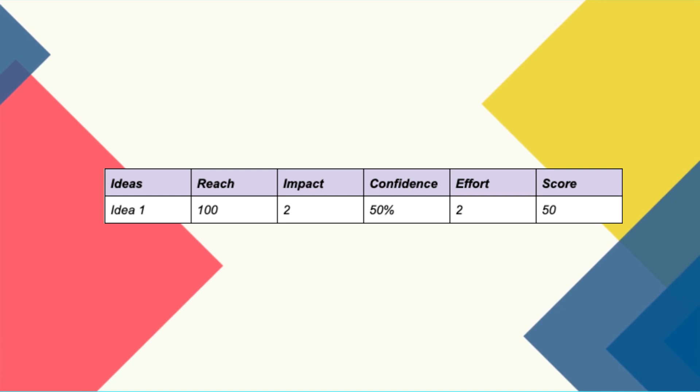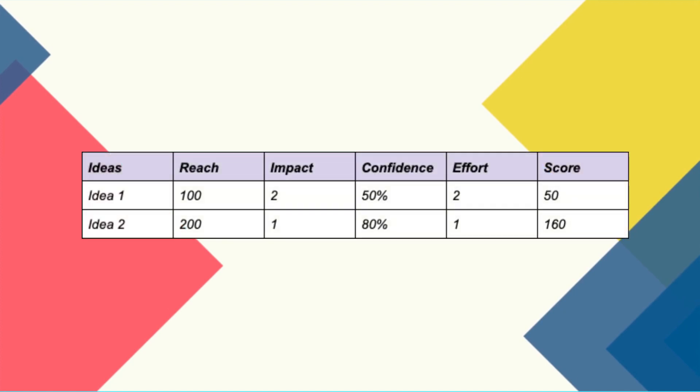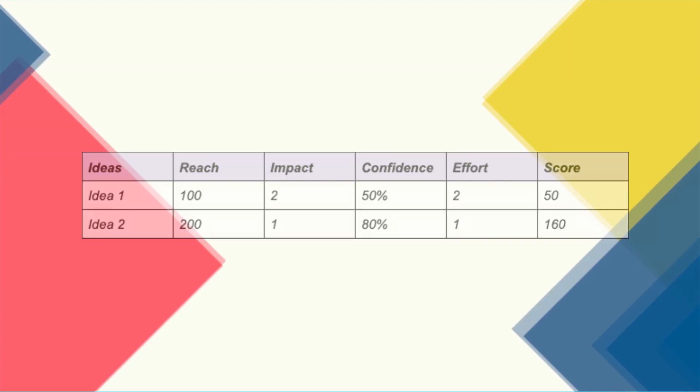Let me walk through an example using this framework for two different ideas. Idea number one is assessed to reach 100 people, with high impact, medium confidence, and an effort of two person-months — giving an overall score of 50. Idea number two reaches double the number of people, but with low impact, higher confidence, and only one person-month of effort — giving an overall score of 160. That means it's three times better to work on idea number two. This is not obvious if we only assess impact, and it's something I've seen many product managers and engineering managers get wrong — optimizing only for high-impact projects while forgetting the other factors this framework considers.